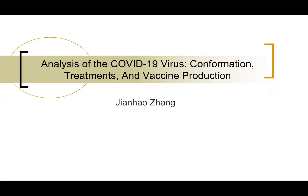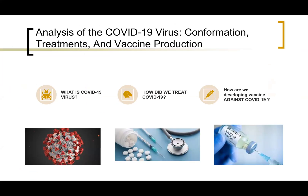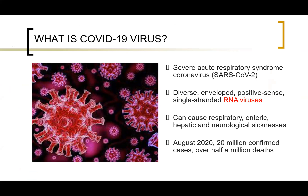My paper is entitled Analysis of the COVID-19 Virus: Confirmation, Treatment, and Vaccine Production. Just as the name implies, my paper is basically answering three questions: What is the COVID-19 virus? How did we treat COVID-19? And how are we developing a vaccine against COVID-19? I'm going to describe each part in detail. In order to fight against a certain virus, we must first understand its confirmation and mechanism so that we could come up with corresponding strategies.